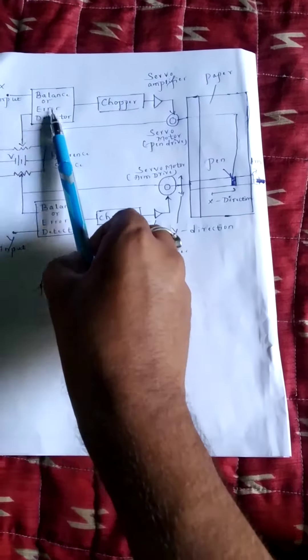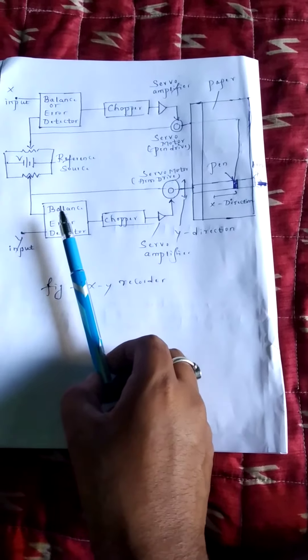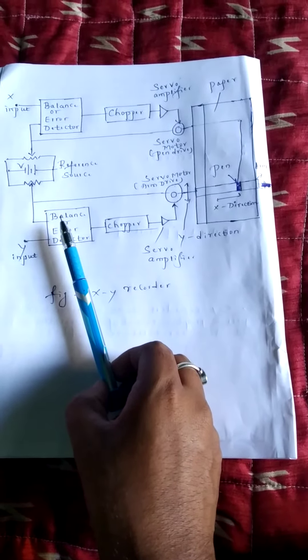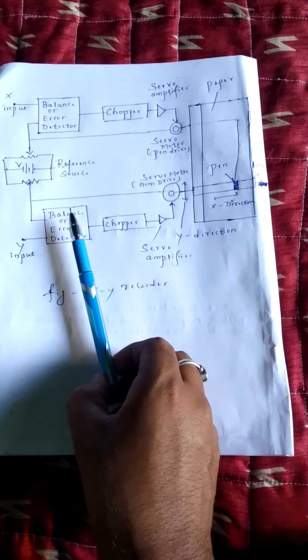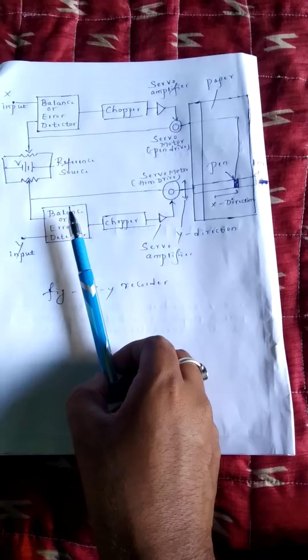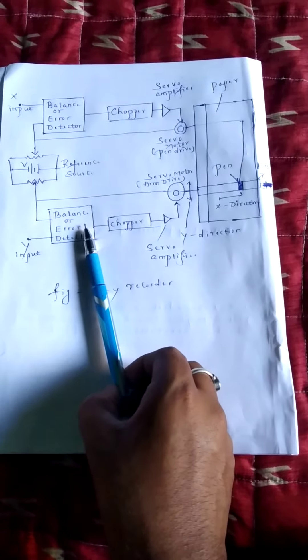Second point, the balancing circuit compares the attenuated signal to a fixed internal reference voltage. Third point, the difference between attenuated signal and the reference voltage is a DC error signal which is the output of balancing circuit.